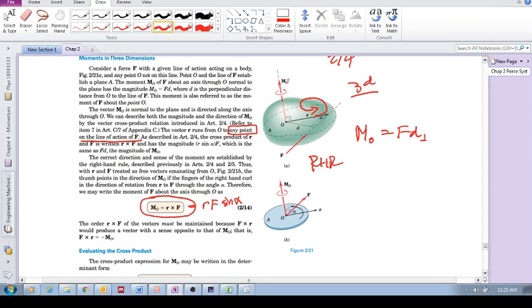Please make sure that you get that right. Remember that r cross F is not the same as F cross r. They have the same magnitude but the opposite direction.